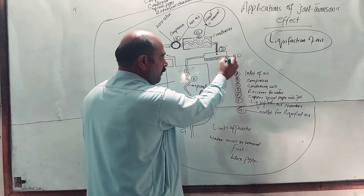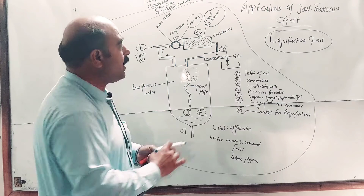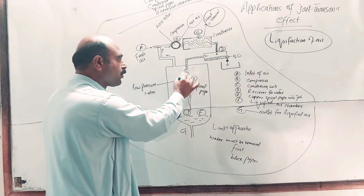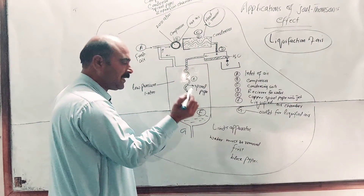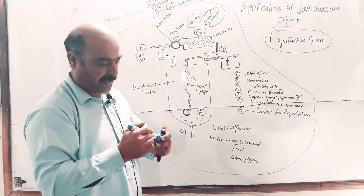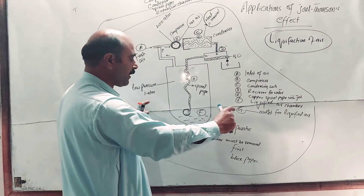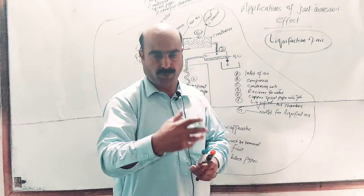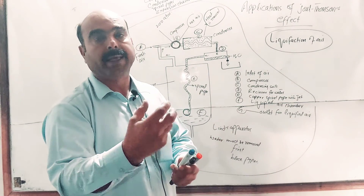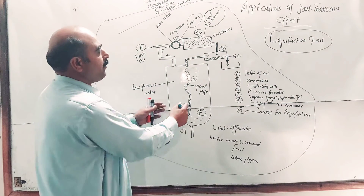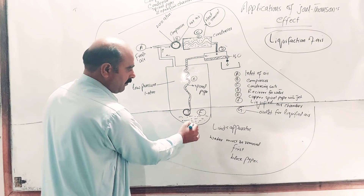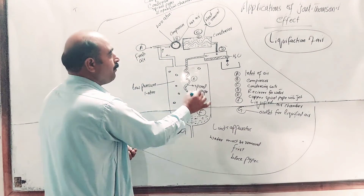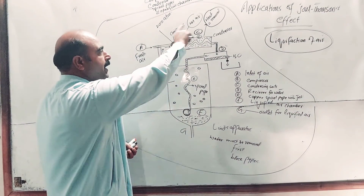The compressed air then enters the spiral pipe, which slows its movement. At the end of the spiral pipe there is a jet — a nozzle. Through this jet, the compressed air is released into the expansion chamber. During expansion, intermolecular attractive forces are broken. Energy is required to break these forces; this energy comes from the gas itself, so the temperature drops. Some molecules convert to liquid form, and the temperature goes down further.